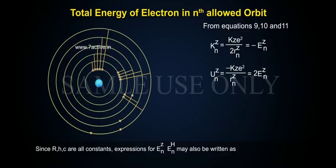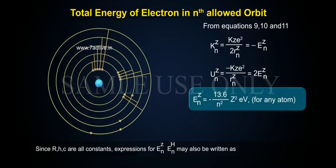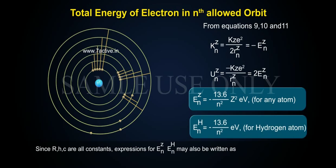EN power Z equals to minus 13.6 by N square Z square electron volt for any atom. ENH equals to minus 13.6 by N square electron volts for hydrogen atom.